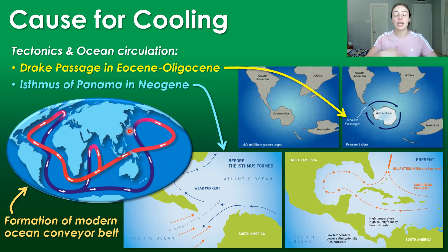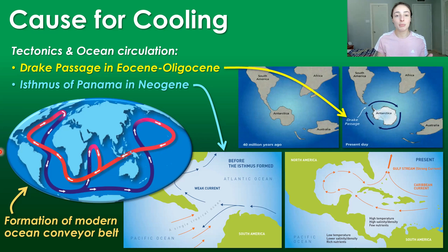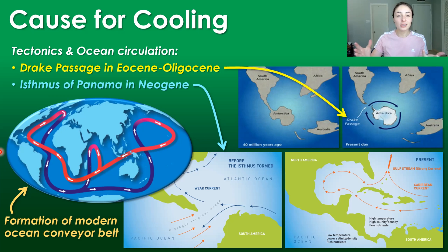basically the temperature- and salinity-dependent circulation of the ocean, in which cold saline dense waters sink to the bottom and circulate the deep ocean, while warm fresher waters circulate at the surface. This is a very well-established circulation pattern in modern-day Earth. But before North and South America were connected with the formation of the Isthmus of Panama, Atlantic waters would have flowed freely into the Pacific,